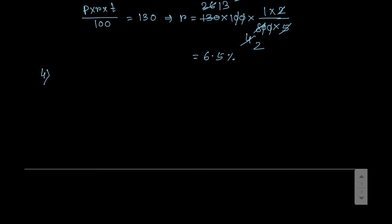Now move on to sum number 4. Find the time when the simple interest on rupees 3.3 lakhs — that means 3,30,000 — at rate 6.5 percent per annum gives simple interest of rupees 75,075. You have to find the time.